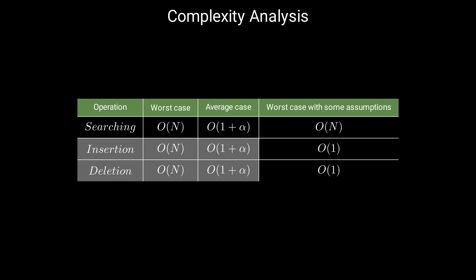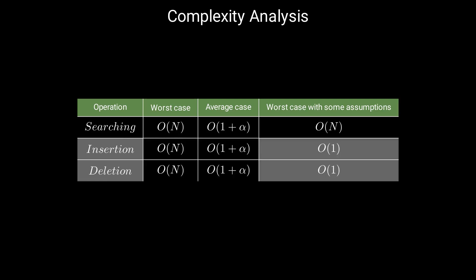Insertion and deletion have the same running time complexity as searching. For insertion, we have to check if the element exists before inserting it, while deletion requires us to find the element with the corresponding key in the linked list. However, insertion can be implemented in O(1) worst case if we assume that the element doesn't already exist. Similarly, deletion can be implemented in O(1) if we already have a pointer to the element in the doubly linked list.